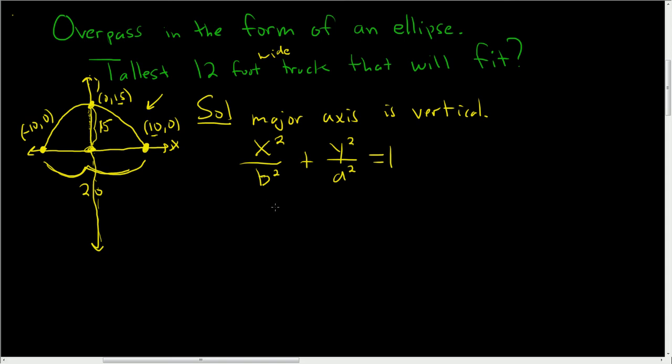So in this case, b is the smaller number. So it will be x squared over—let's identify a and b. a is going to be 15, and b is going to be 10. So it's going to be x squared over 100 plus y squared over 225. a squared, 15 squared is 225. And this is equal to 1.